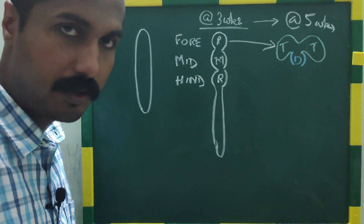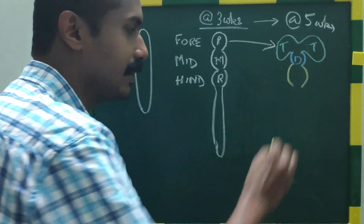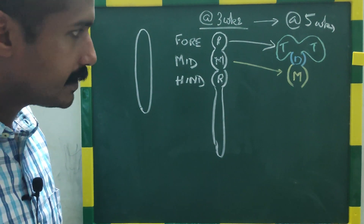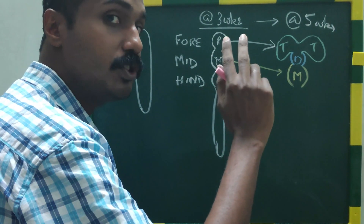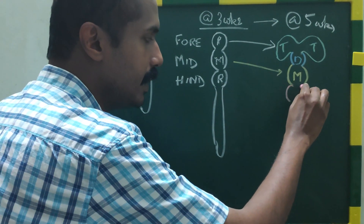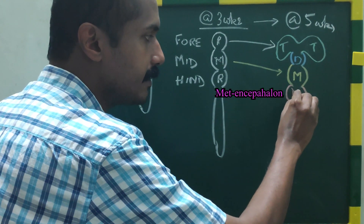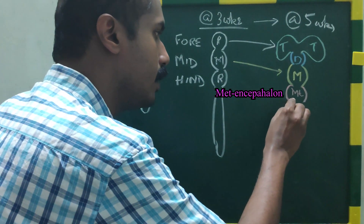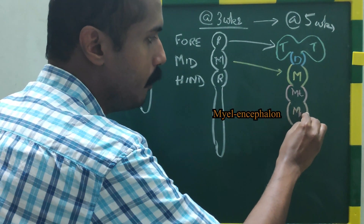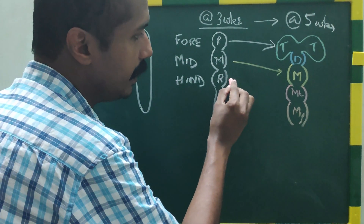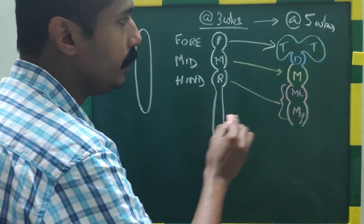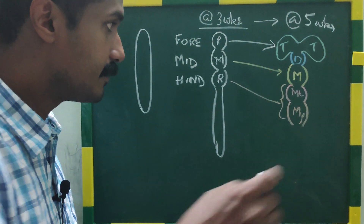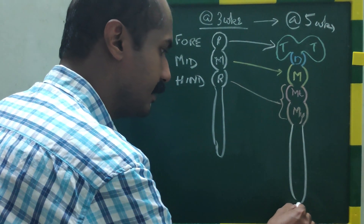Now, what happens to the mesencephalon? The mesencephalon will remain as such — that is fortunate. Next, the rhombencephalon or hindbrain develops into two brain vesicles. You have a more cranial metencephalon and a more caudal myelencephalon. So the rhombencephalon develops into the metencephalon and the myelencephalon. The remaining part will remain as the tube itself.